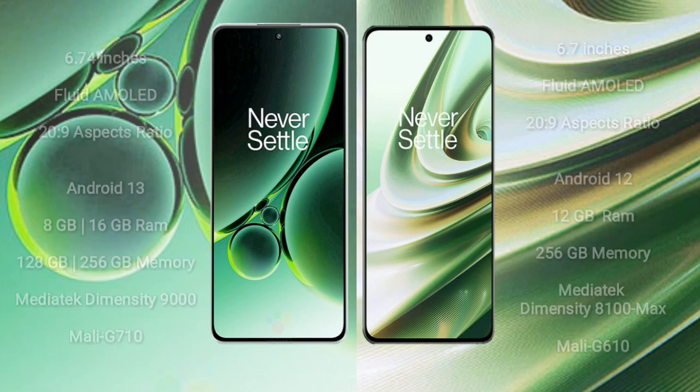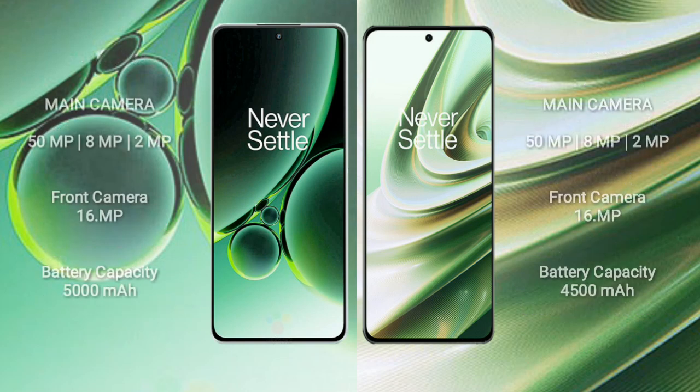OnePlus Nord 3 features a triple rear camera setup: 50MP plus 8MP plus 2MP, and a 16MP front camera. OnePlus 10R also features a triple rear camera setup: 50MP plus 8MP plus 2MP, and a 16MP front camera. OnePlus Nord 3 has a 5000mAh battery with 80W fast charging, while OnePlus 10R has a 4500mAh battery with 150W fast charging support.